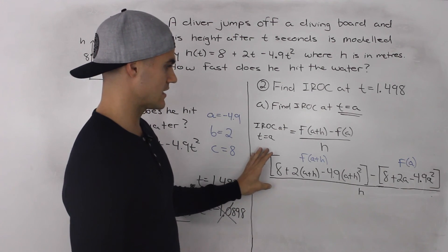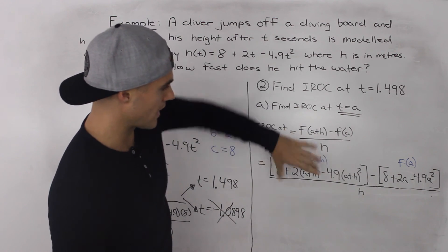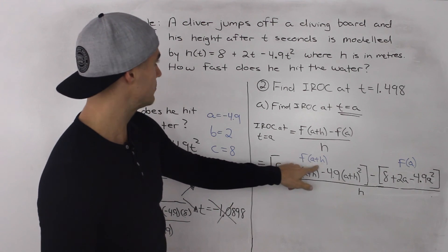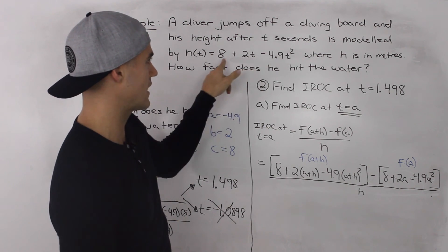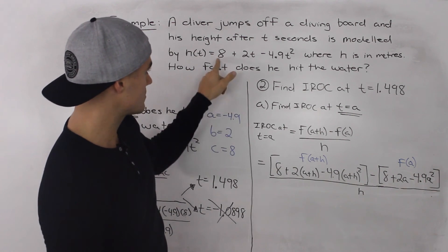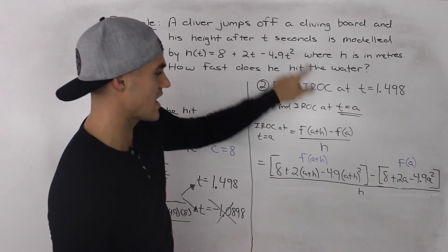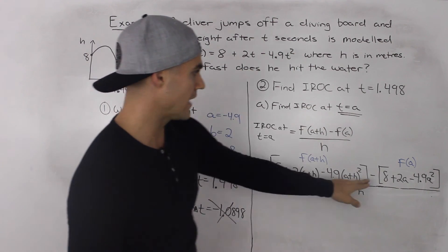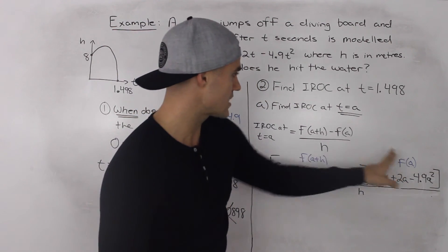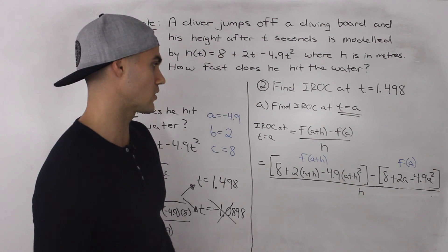So this here is the next line of the difference quotient. This big square bracket here represents f(a + h) and all I did was I plugged in a + h into the t value for the equation that we're given. So 8 + 2(a + h) - 4.9(a + h)² minus f(a). So this square bracket here represents f(a) and all I did was I plugged in a for the t values in the equation that we were given.